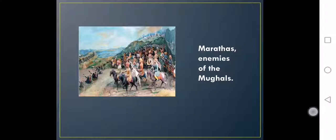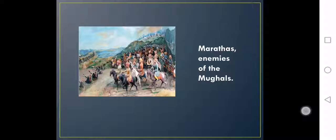Because of these reasons, the Marathas appeared. When they saw the Mughal Empire becoming weaker and weaker, they took advantage. They were Hindus and enemies of the Mughals. They lived in mountainous areas and raided frequently to capture important possessions of the Mughals.